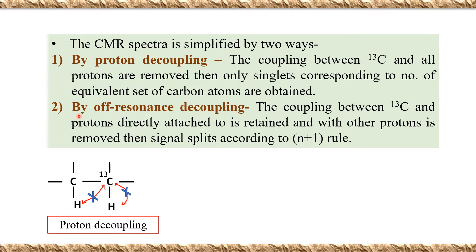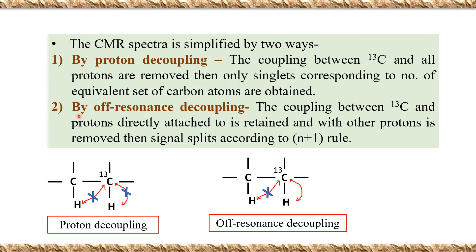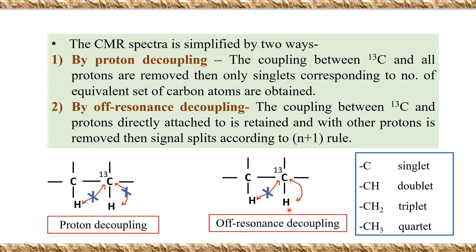Another method is off-resonance decoupling. In off-resonance decoupling, the coupling between 13C and protons directly attached to it is retained, while coupling with other protons is removed. Splitting then takes place according to the N+1 rule for directly attached protons. A carbon bearing no hydrogen gives a singlet; a carbon attached to one hydrogen gives a doublet (CH); CH2 gives a triplet; and CH3 gives a quartet.